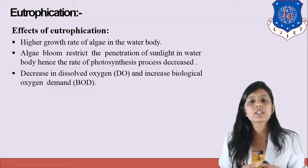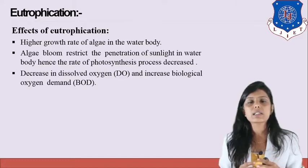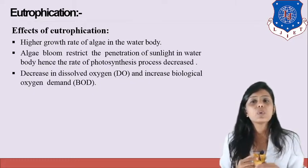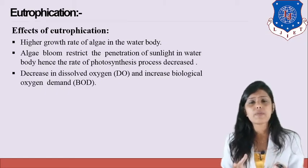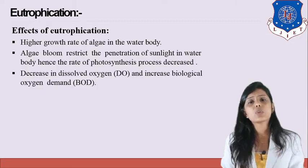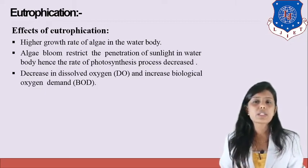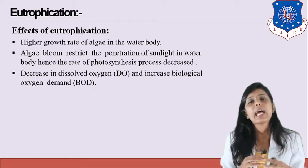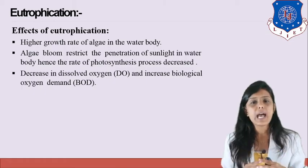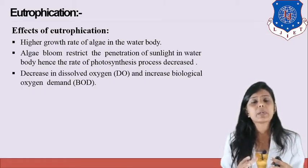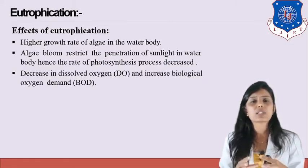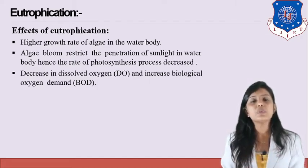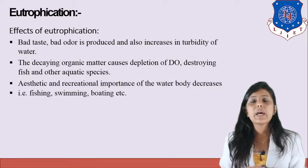Effects of eutrophication: as nitrogen and phosphorus increase in the water body, algae blooms increase and restrict the penetration of sunlight, hence the photosynthesis process decreases. Plants do not get proper sunlight so the process slows further. Dissolved oxygen decreases and biological oxygen demand increases. Since photosynthesis is not occurring properly, plants die; algae with its shorter lifespan also dies, and bacteria decompose those organisms by utilizing dissolved oxygen from the water body.